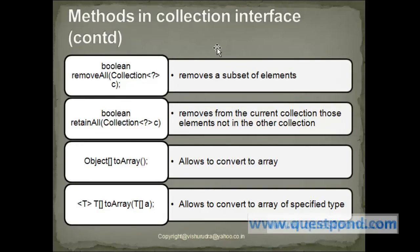Similarly there are also provisions to remove all the elements from a given collection — that is, the collection passed as parameter will be used to remove the elements which match. RetainAll will return only those values which are not present in the other collection which is passed. The toArray and parameterized toArray are used to convert from the collection form to the array form; one returns the object array while the second returns the parameterized array.